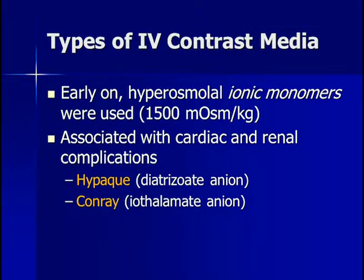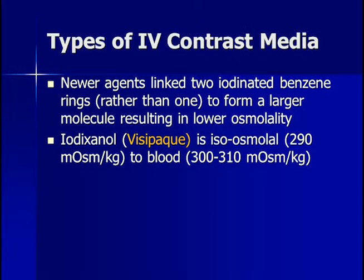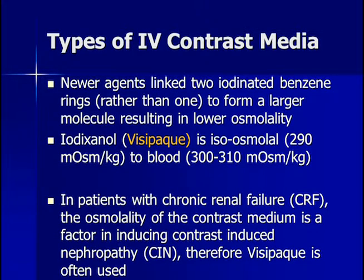Early on, hyperosmolar ionic monomers were used, which had high osmolality compared to blood at approximately 300, and were associated with higher cardiac and renal complications. Examples were Hypaque and Conray. Newer agents were linked to two iodinated benzene rings rather than just one, forming a larger molecule with lower osmolality. An example is Visipaque, which is essentially isoosmol to blood. In patients with chronic renal failure, the osmolality of contrast medium is one factor in inducing contrast-induced nephropathy, and therefore Visipaque is often used in those patients.